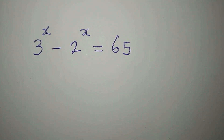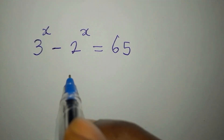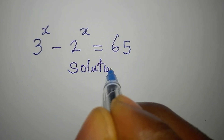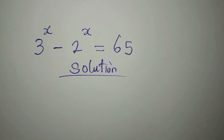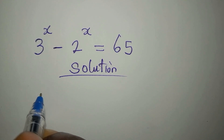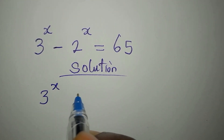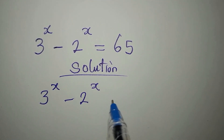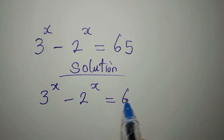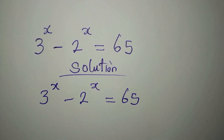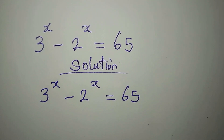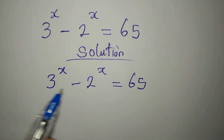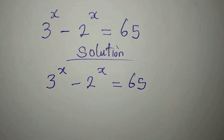Hello everyone, let's provide the solution to this problem: 3 to the power of x minus 2 to the power of x equals 65. What I want to do now is to use difference of two squares for this.